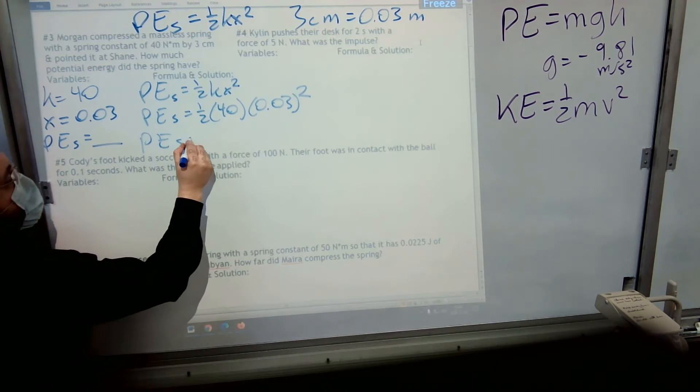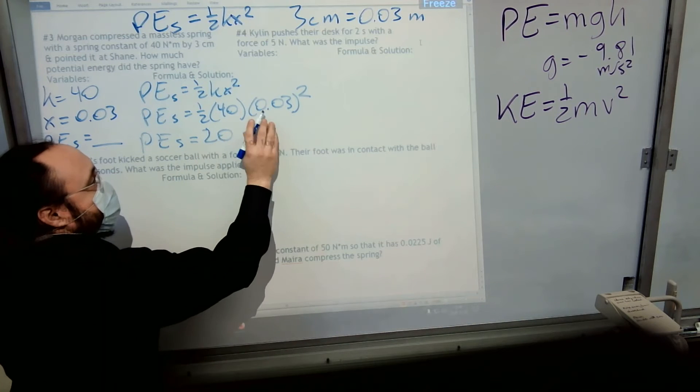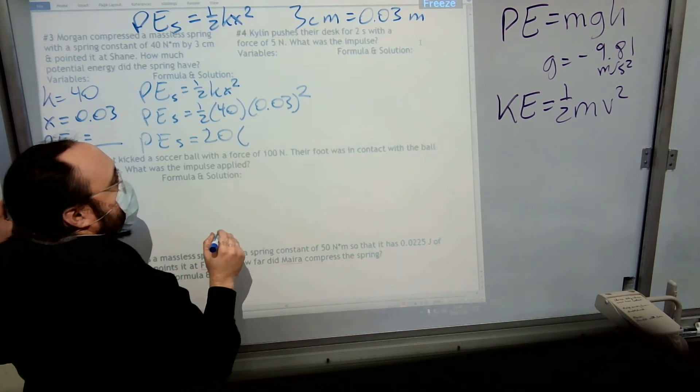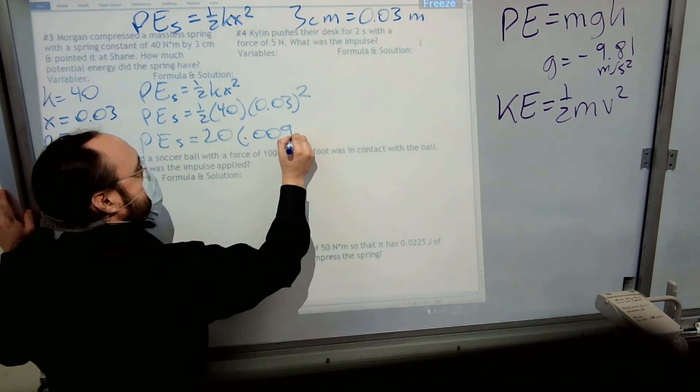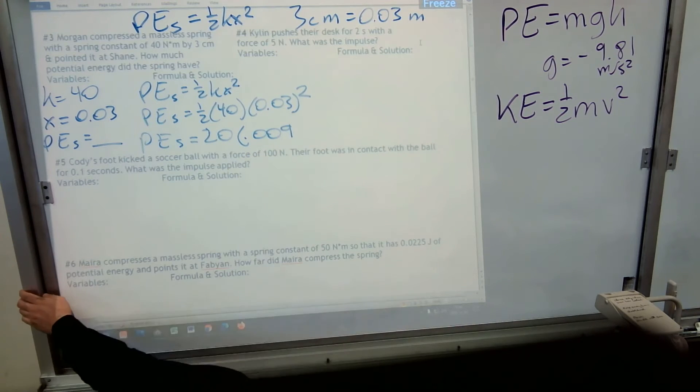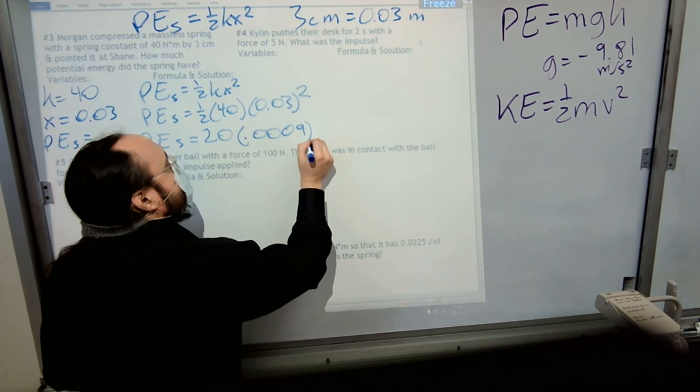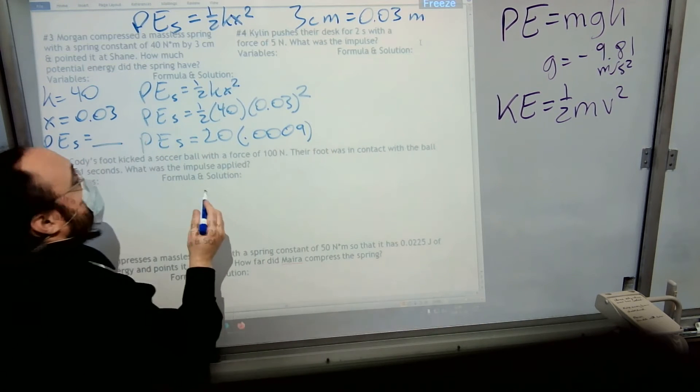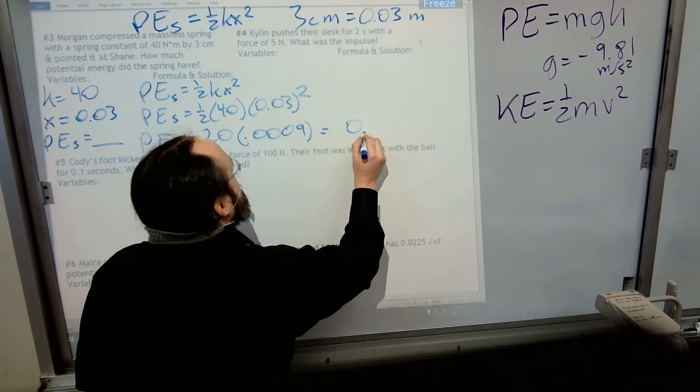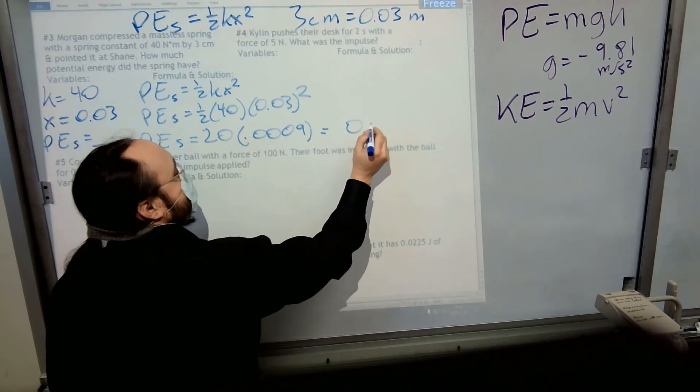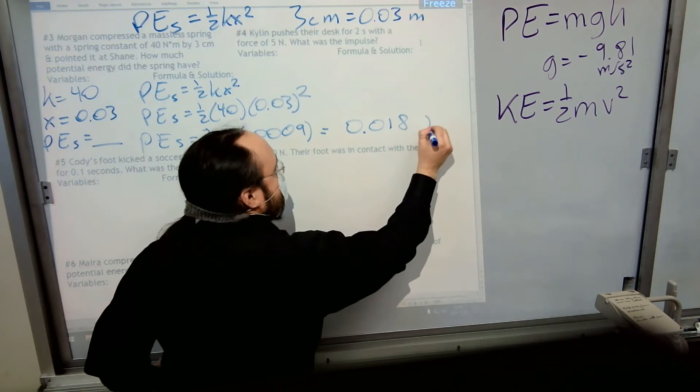So I'm going to say, okay, one-half times 40 may be 20, but I can't multiply that by 0.03. I have to do the 0.03 squared first, which makes 0.009. That's just two zeros. 0.009, there we go. And now I can do 20 times that. Makes, what, two times nine is 18, right? So 20 times that will be 0.018. And that's potential energy, so it's in joules.